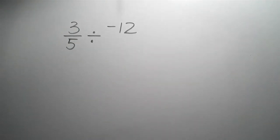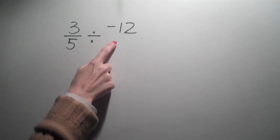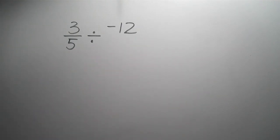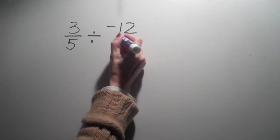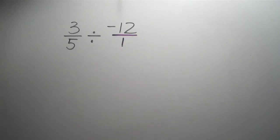Okay, let's do another one. In this case we have 3 fifths divided by negative 12. Well, if we want to make this a fraction, we can simply put it over 1. Now we have a fraction.